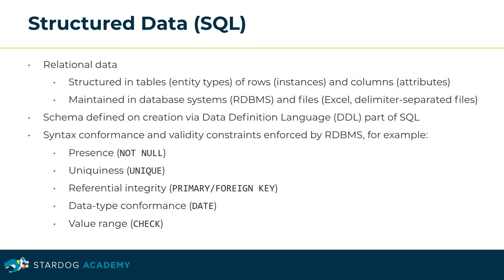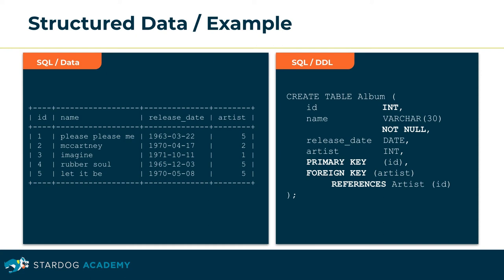The database management system enforces the constraints imposed by the schema. It ensures that key values are present and unique, references via primary and foreign keys are preserved, and attribute values comply with their data type or value range. The table album on the left has been created by the SQL command on the right. The schema defines the data structure along with the inherent constraints.